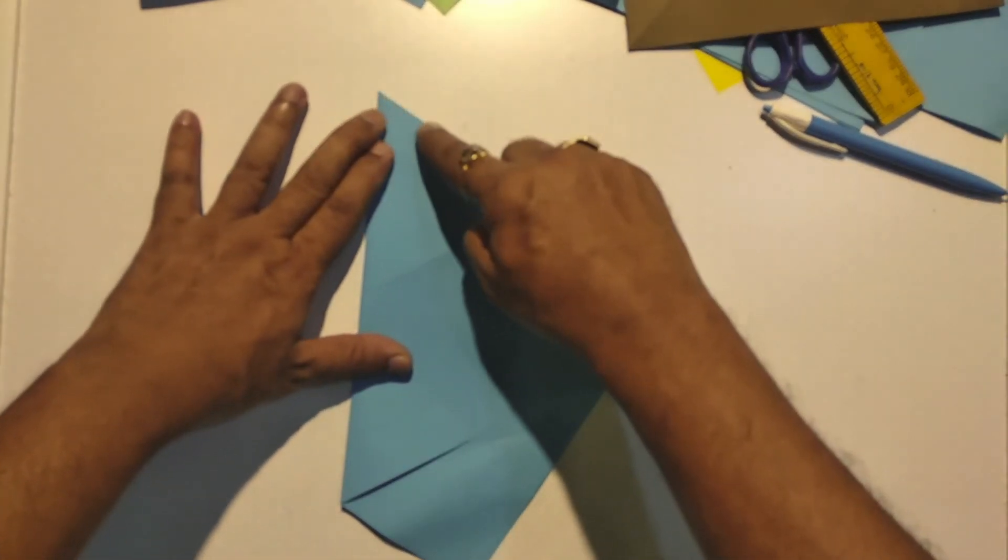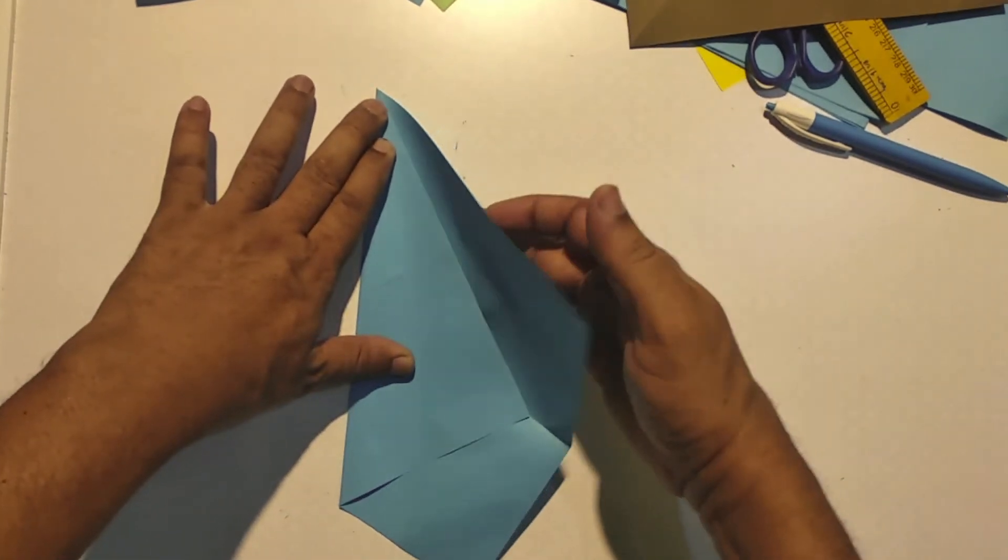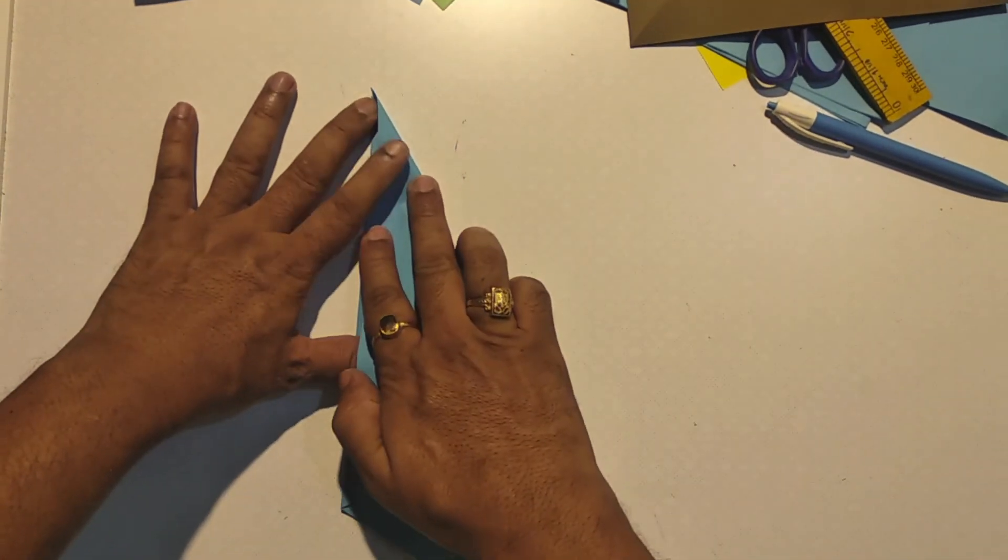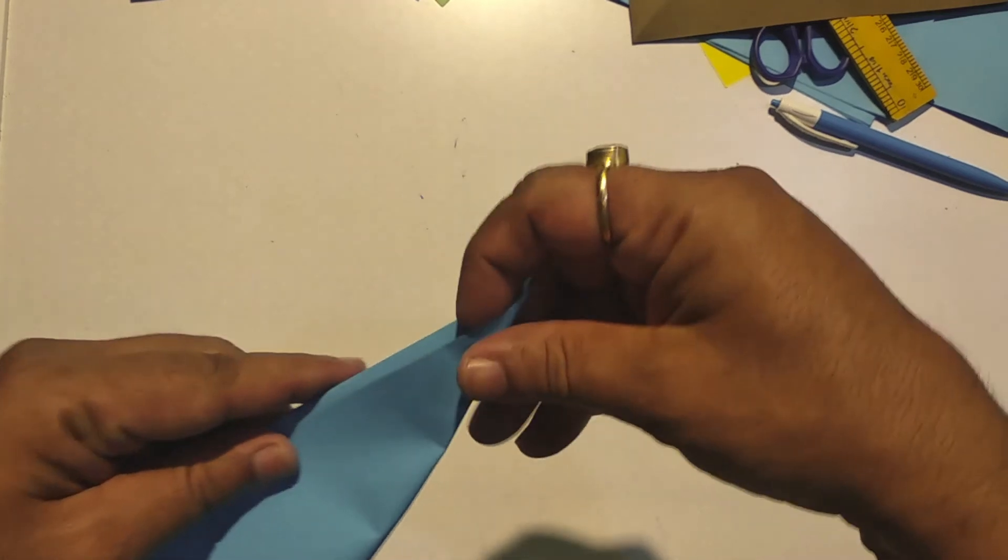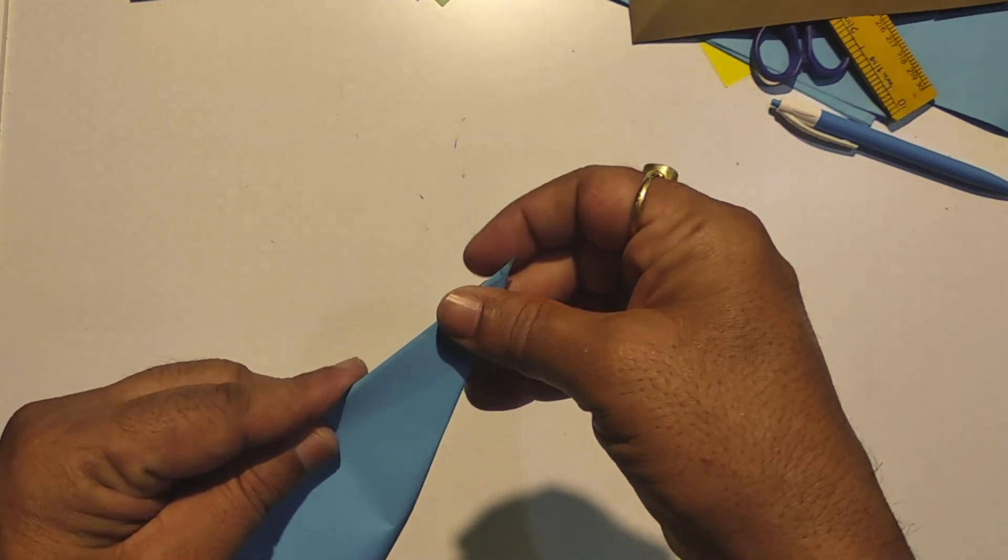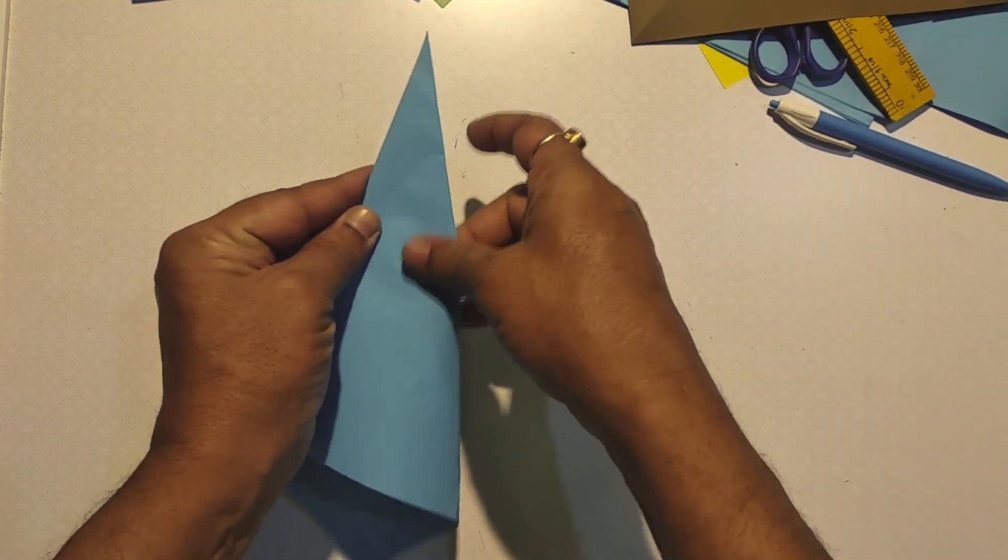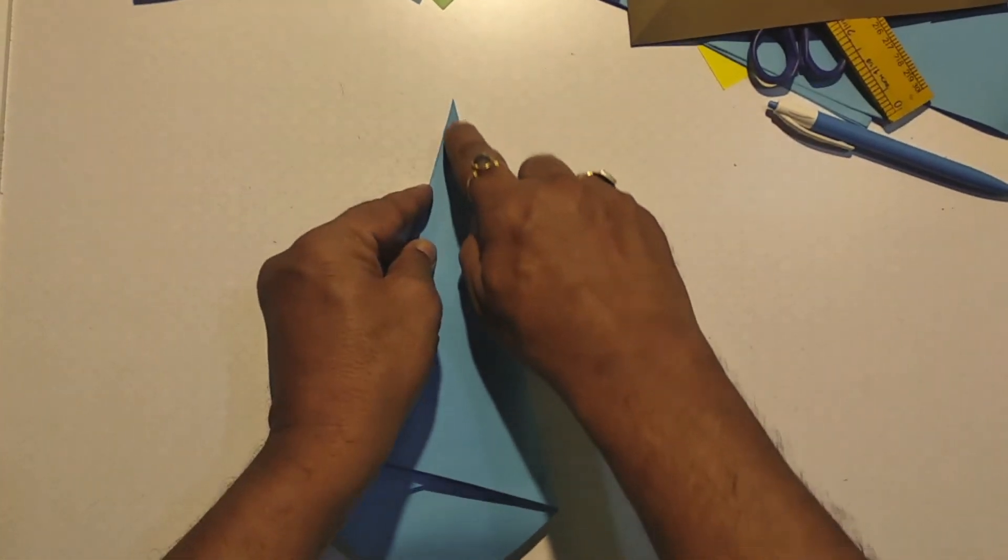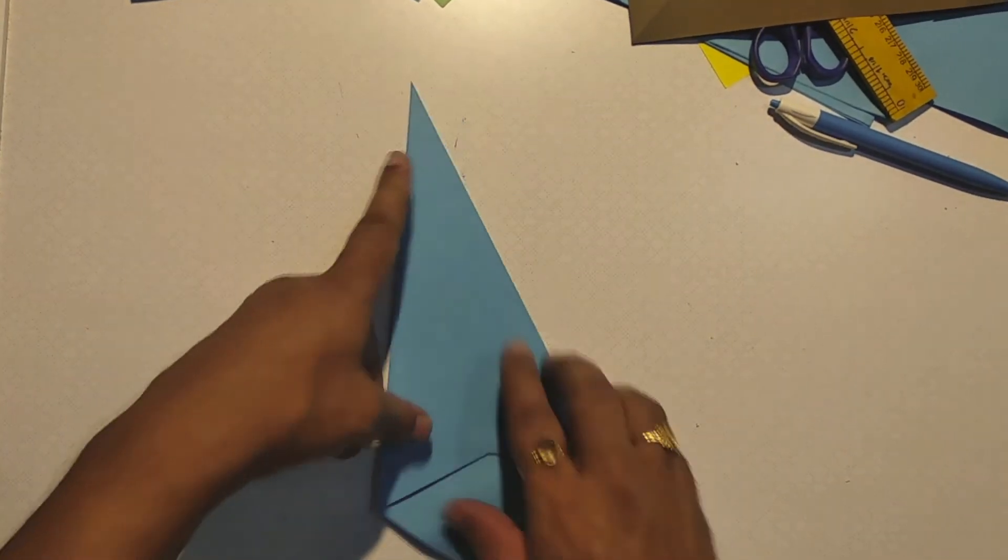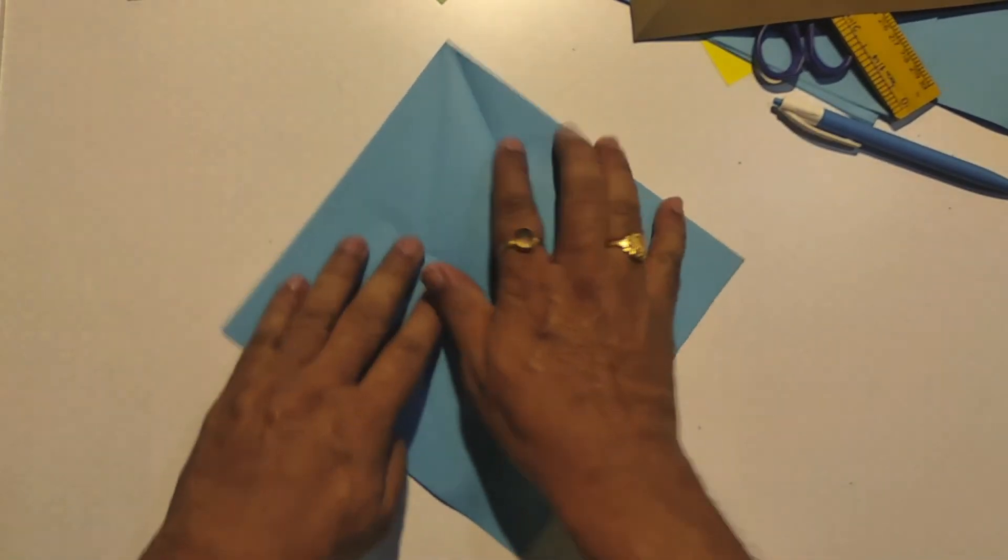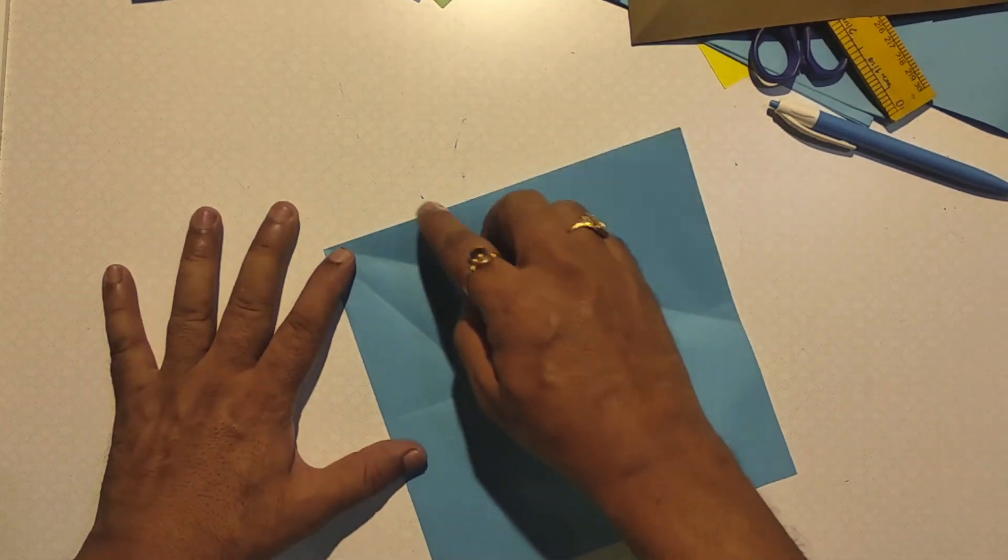Now the rest of the angle is overlapped onto the first angle. Now we have divided the corner of the square into three equal angles.